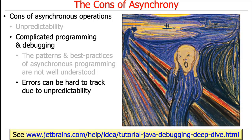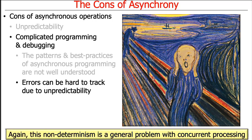Errors can be harder to track down because when you run the code it may perform differently each time, which can be confusing. This is not just a problem with asynchronous programming — it's a problem with concurrent programming in general. Anytime you have concurrent things, you'll often encounter the same kind of behavior.